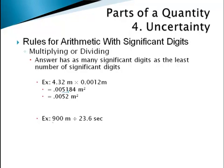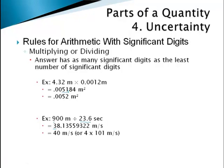For division we do the same thing. Take 900 divided by 23.6: 900 has only one significant digit — the zeros are placeholders — and 23.6 has three significant digits. So the final answer is allowed only one significant digit. Dividing gives a long decimal, but writing all those digits is misleading — we really only know this answer to the nearest 10. Rounding to one significant digit gives 40 meters per second.